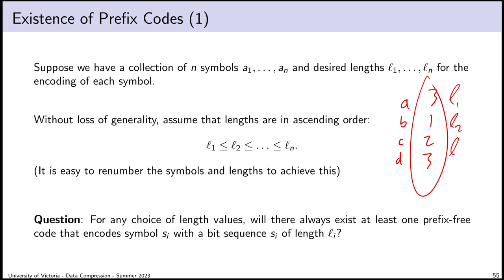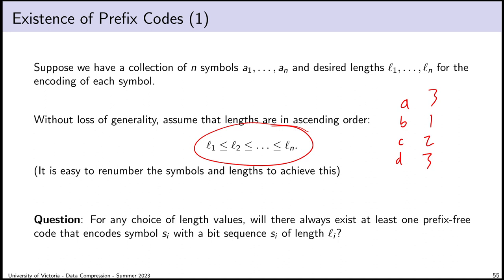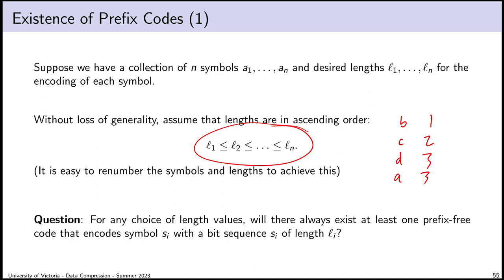Without loss of generality, I'll assume the lengths are provided in ascending order — just renumber your symbols accordingly, and reverse the transformation later. The question is: will there always exist at least one prefix-free encoding giving symbol Ai a bit sequence of length Li? The answer is no — not for any choice of lengths. For example, if I want three different symbols each represented by a one-bit sequence, after using 0 and 1 there are no one-bit sequences left. So some length choices are invalid.